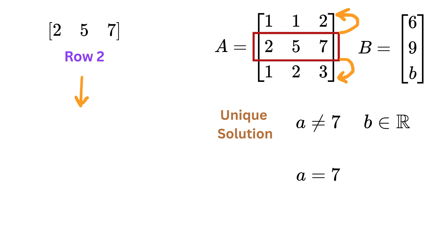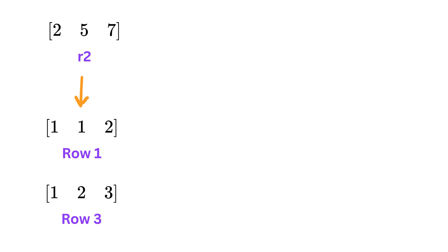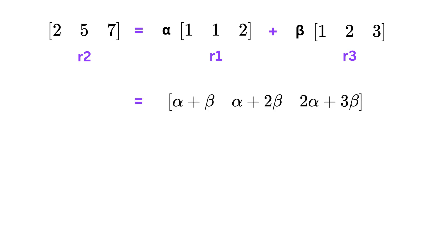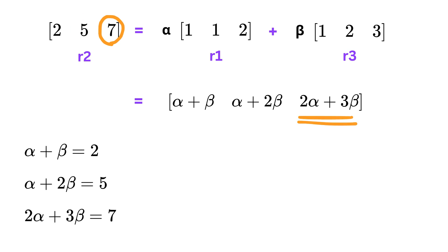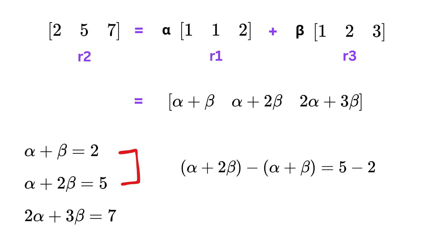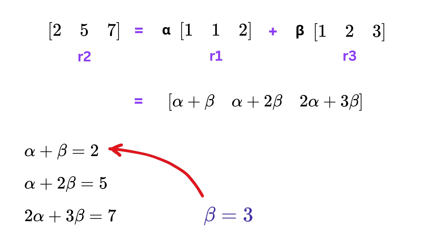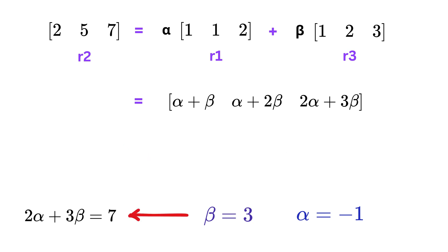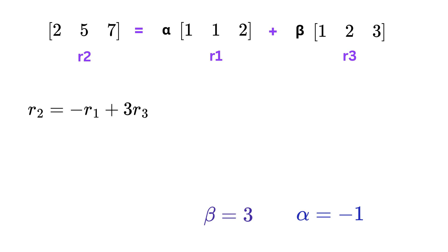With a = 7, we write the three coefficient rows and express row 2 as α·(row 1) + β·(row 3). Writing this component by component gives three equations: α + β = 2, α + 2β = 5, and 2α + 3β = 7. Subtracting the first from the second gives β = 3, and substituting back gives α = −1. Checking the third equation: 2·(−1) + 3·3 = 7, which checks out. So row 2 = −(row 1) + 3·(row 3).